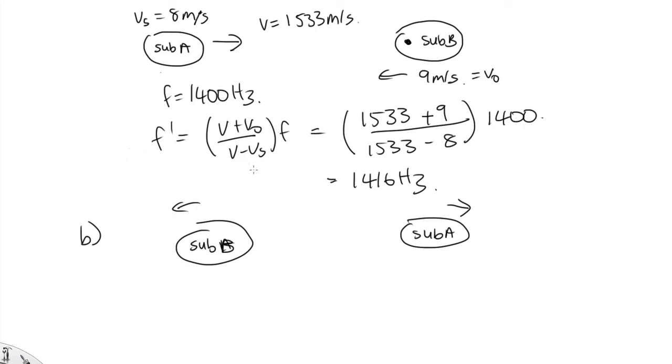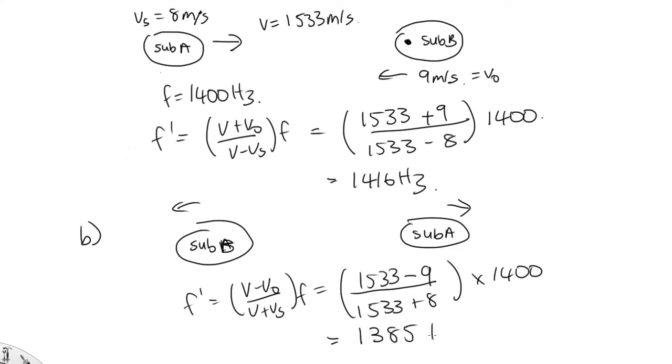So what we're going to need to do is switch these signs. So f prime will be v minus v naught over v plus v s f. 1,533 minus v naught, which is the 9, over 1,533 plus v s, which is the 8, times 1,400. Solving that on the calculator, you should end up with 1,385 hertz.